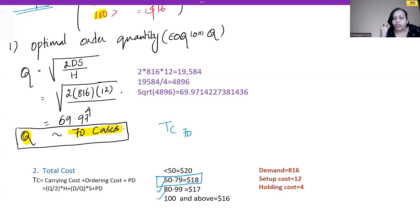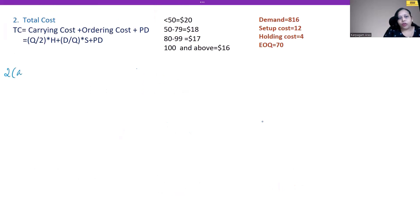After finishing, we are going to compare 70, 80, and 100—wherever it gives us the least cost, that specific point we will consider. At the first level, I am calculating the total cost at 70. First, what is Q? Q is our economic order quantity, which is 70 units. 70 ÷ 2 × the holding cost—the holding cost is 4—plus the demand, which is 816 cases annually, divided by the quantity.